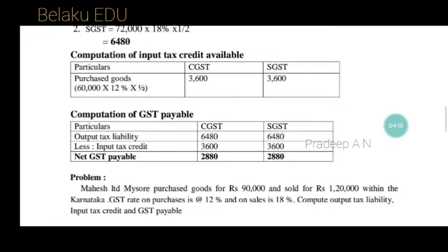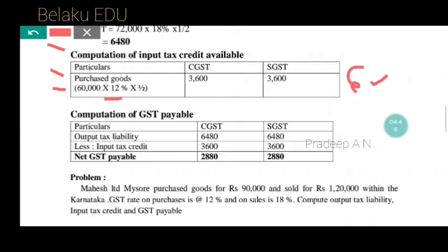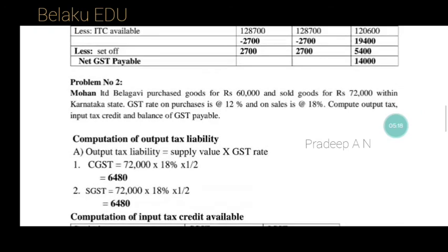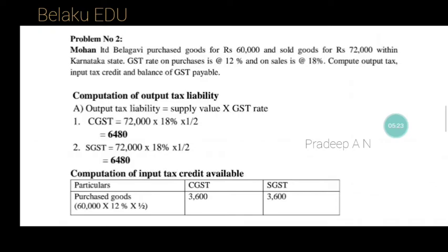Now computation of Input Tax Credit available. Mohan purchased goods worth Rs. 60,000 at a tax rate of 12%. Since it is intra-state, 12% is split: 6% CGST and 6% SGST. So ITC available: CGST = 60,000 × 6% = Rs. 3,600 and SGST = Rs. 3,600. So Rs. 3,600 was paid as CGST and Rs. 3,600 as SGST on purchases.